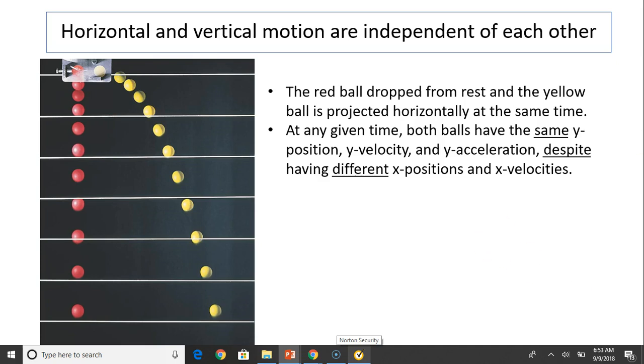Horizontal and vertical motion are independent of each other. This picture shows a red ball dropped from rest and a yellow ball projected horizontally at the same time. Both balls have the same y components: same y position, same y velocity, same y acceleration, despite having different x positions and x velocities. So x and y do not affect each other.